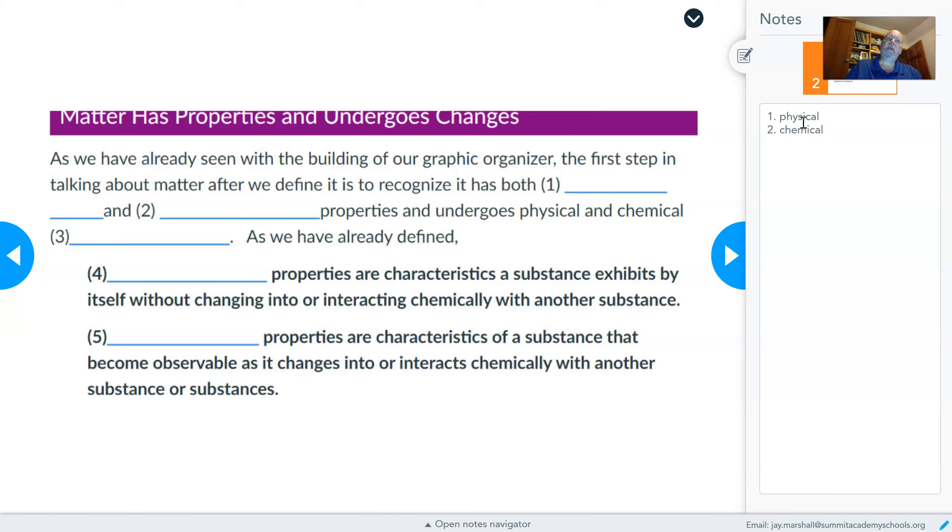And these are the things that we use to identify or describe certain substances. And we also know that these substances undergo physical and chemical changes. We have defined physical properties as those properties that are present without the substance actually changing or interacting chemically with another substance.